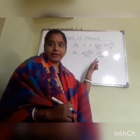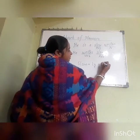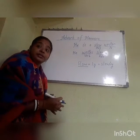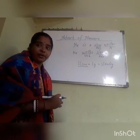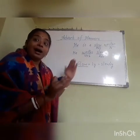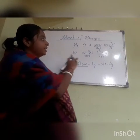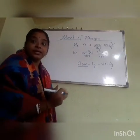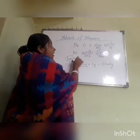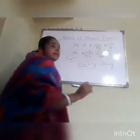You can identify adverbs of manner by noticing that we add '-ly' to an adjective — 'slow' becomes 'slowly.' There are some words where we don't add '-ly,' but most commonly these '-ly' words tell us how an action is done. For example: 'He writes slowly' — how does he write? He writes slowly. That 'slowly' answers the question 'how.' So adverbs of manner tell us how the work is done.